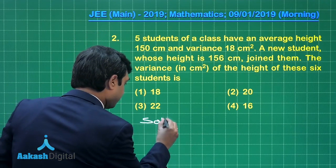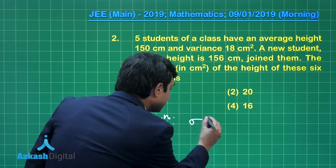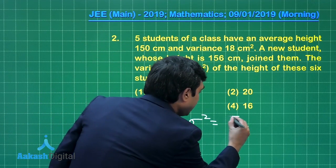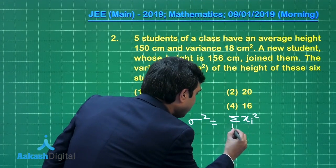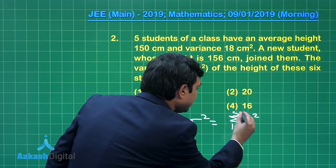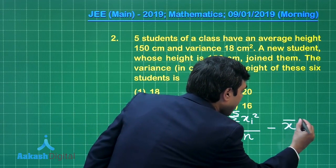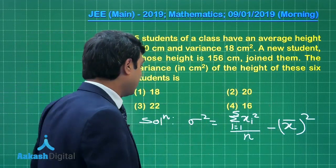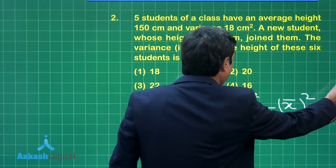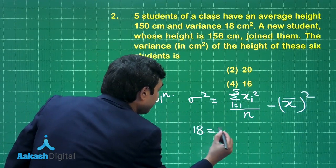Let us start with this question. What is the variance? σ² = (Σxi²)/n - x̄². Where x̄ is the mean. Let us put the data here. We have σ² = 18 given in the question, Σxi² (i = 1 to 5) divided by 5, minus x̄ which is 150, so it is 150².